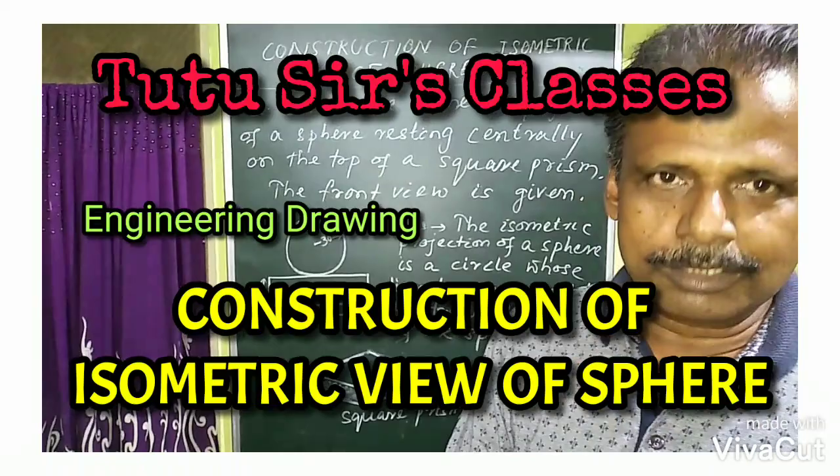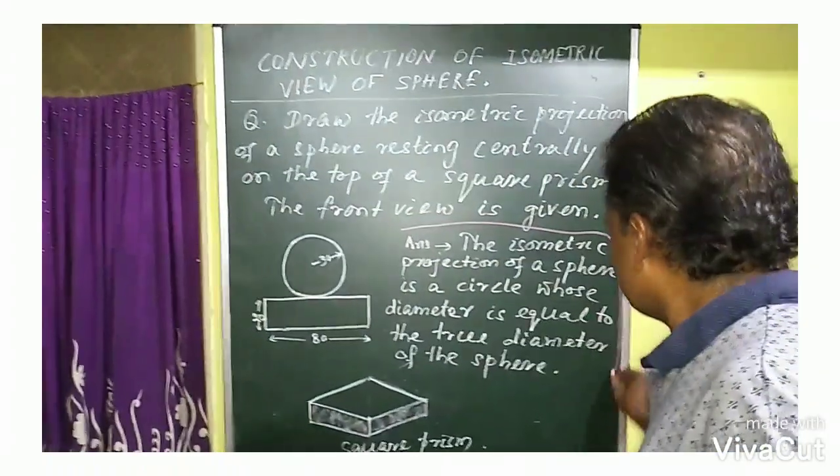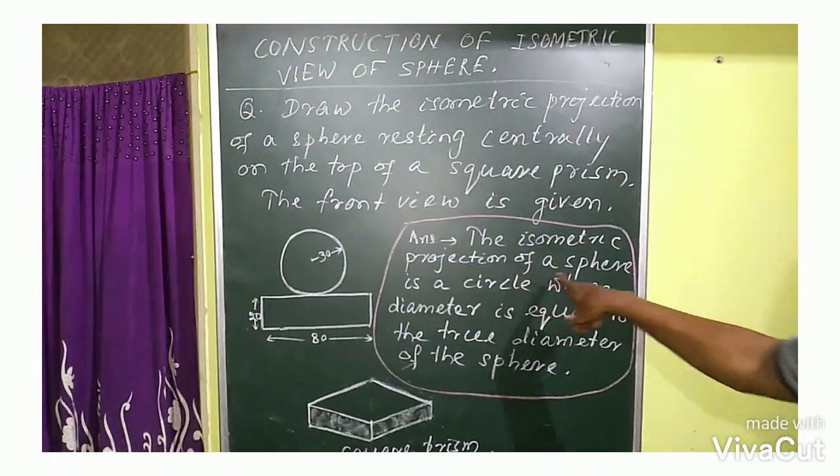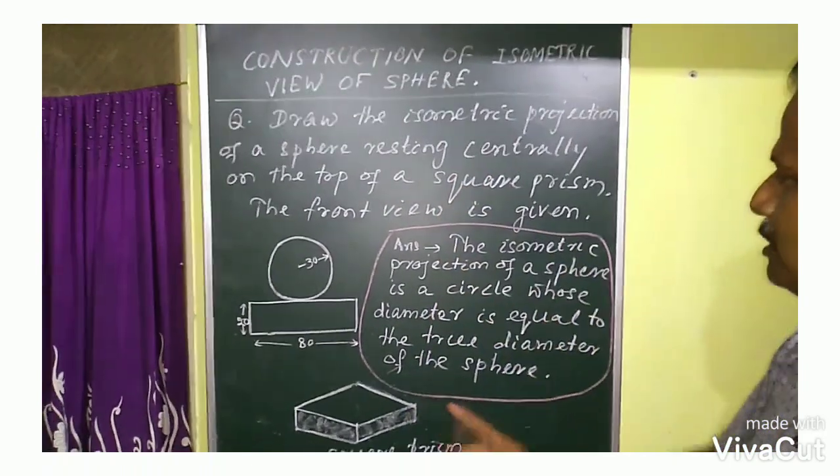If we look at the sphere, you can see the sphere. The isometric projection of a sphere is a circle. The isometric projection of a sphere is a circle.